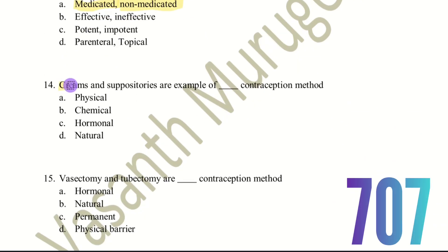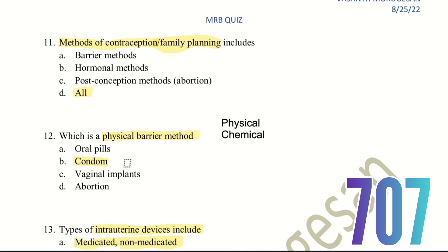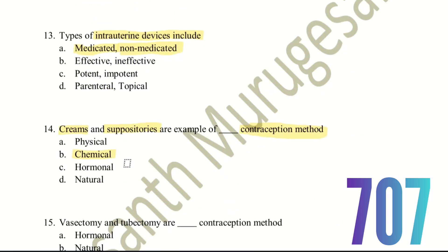Fourteenth question: creams and suppositories are examples of which contraception method? The choices are physical method, chemical method, hormonal method, or natural method. Since creams and suppositories contain chemicals, they belong to the chemical contraception method. In contrast, a condom acts as a physical block — that is a physical barrier method.